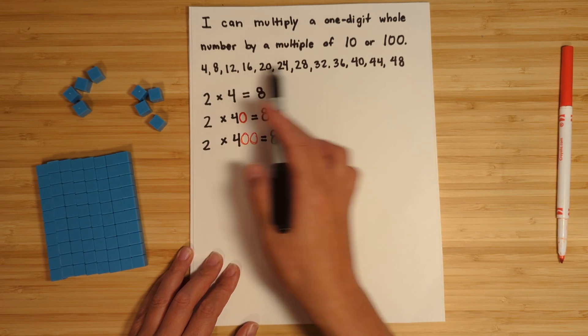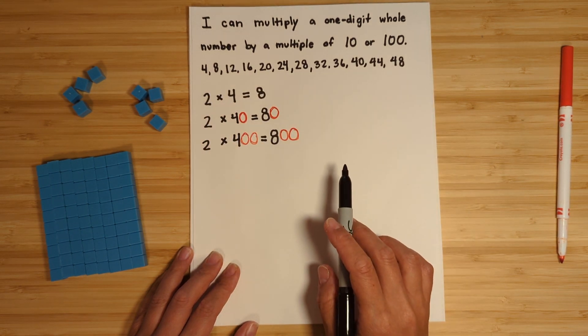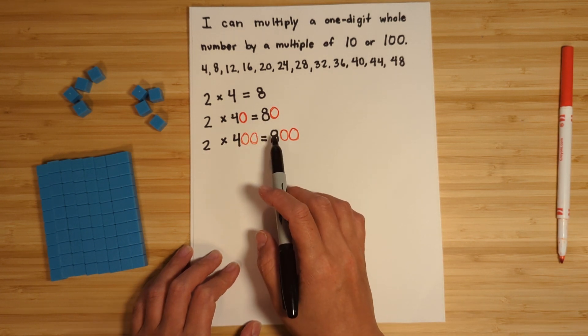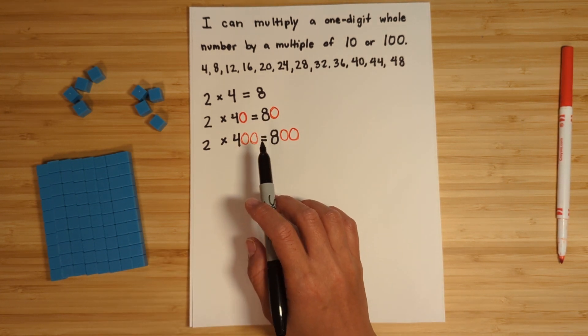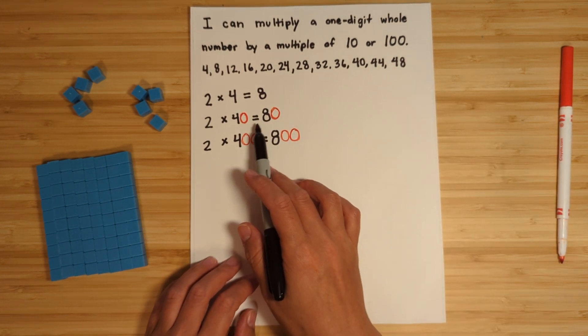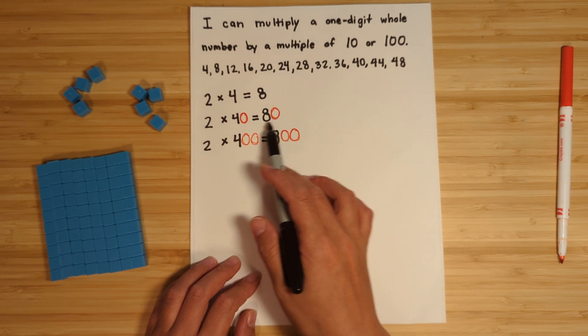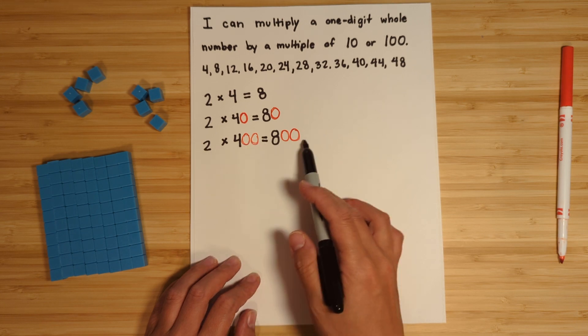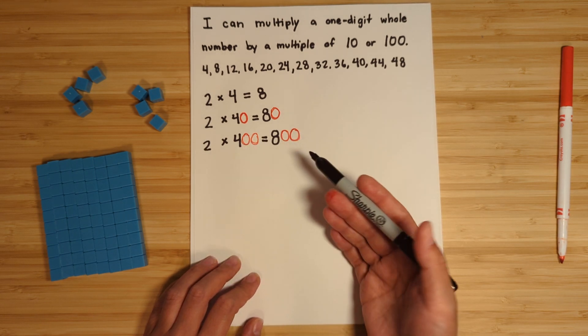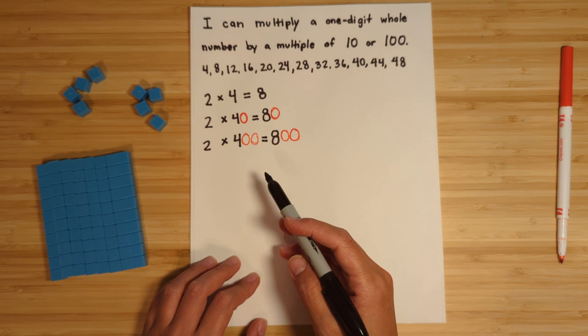I colored the zeros in red because you may notice that hey, on the equal sign, right on the left of the equal sign there's one zero, on the right there's one zero. On the left there's two zeros, on the right there's two zeros. And yes, that's a pattern that you might notice, but it does not work every time.